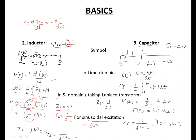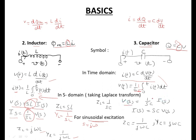For the capacitor, current equals rate of change of charge dq/dt, and q = CV where C is capacitance and is constant. Therefore i(t) = C dV/dt. In time domain it is written as this, and for V(t) we integrate and divide by 1/C. When we take the Laplace transform, V(s) = (1/sC)·I(s) and I(s) = sC·V(s). So impedance is 1/sC and admittance is sC.